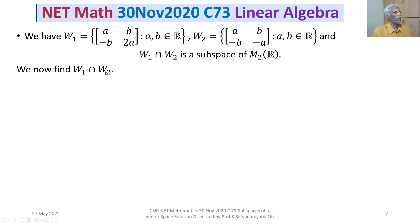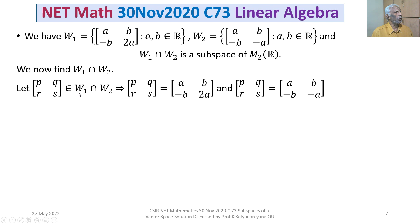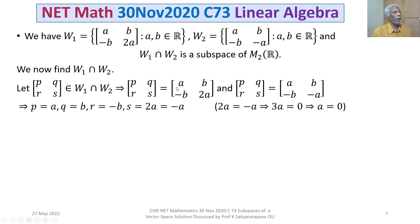We now find W1 ∩ W2. Let the 2×2 matrix [P, Q; R, S] belong to W1 ∩ W2. That means it belongs to W1 and is of the form [A, B; -B, 2A], and it also belongs to W2 and is of the form [A, B; -B, -A]. Equating corresponding entries: P = A, Q = B, R = -B in both cases.